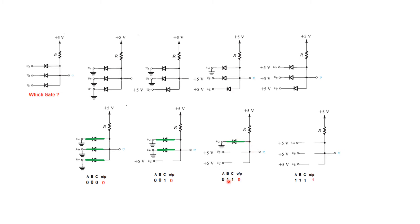In the final case, all three are reverse biased, so we have all three inputs as 1. This terminal is no longer connected to ground, so this point will have the same voltage as the supply voltage — because no current is flowing and nothing is dropped across the resistor — so this is 5V, which is logic 1. So all three inputs one and output one.